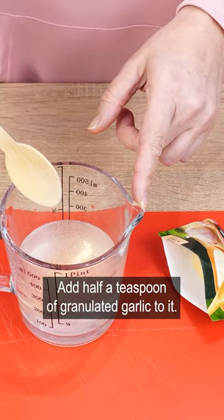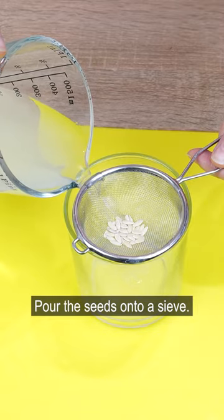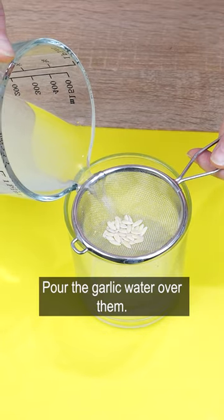Add half a teaspoon of granulated garlic to it. Stir until the garlic dissolves. Pour the seeds onto a sieve. Pour the garlic water over them.